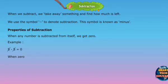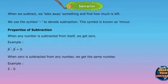When 0 is subtracted from any number, we get the same number. Example: 5 minus 0 equals 5.